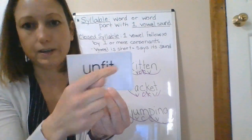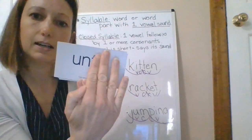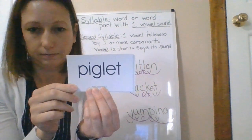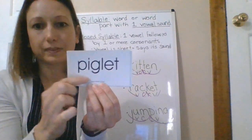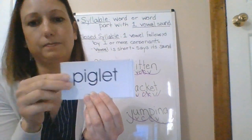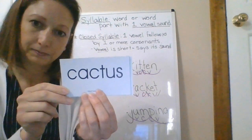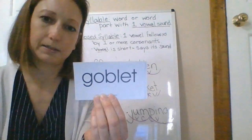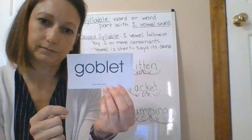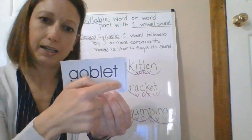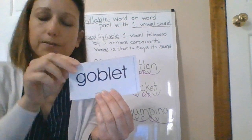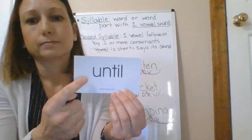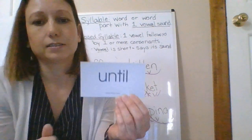Un-fit — unfit. That's 'un' as a prefix meaning 'not' — not fit. Pig-let — piglet, a baby pig. Cac-tus — cactus. Gob-let — goblet, a fancy drinking glass or cup. Un-til — until. Good job! Give yourself a pat on the back for reading those two-syllable words.